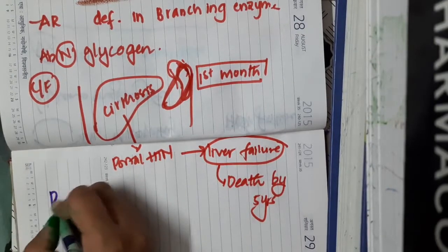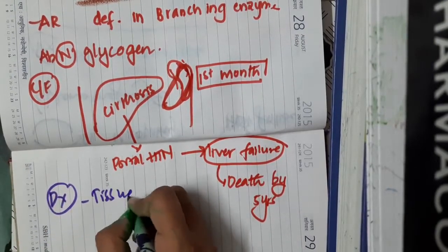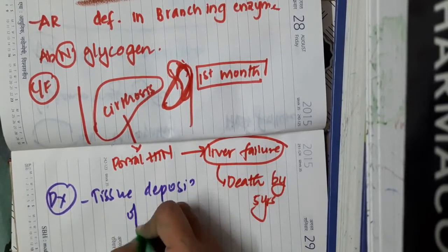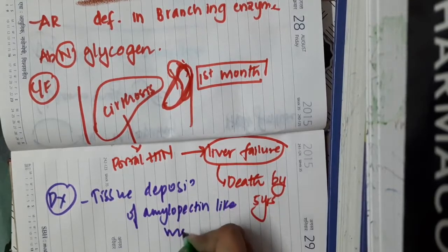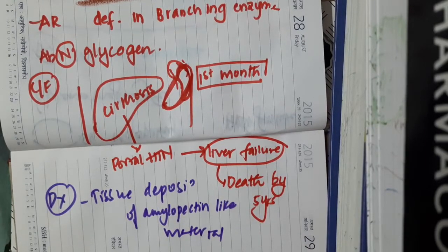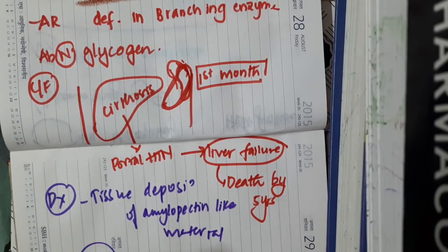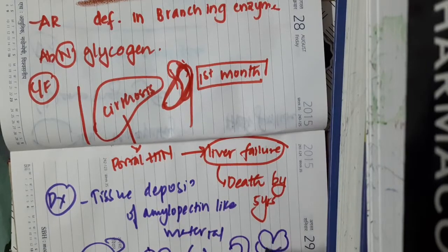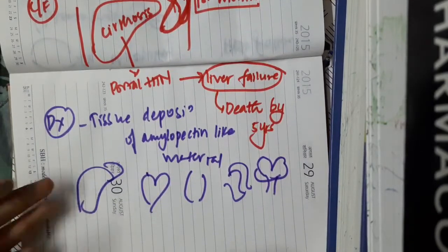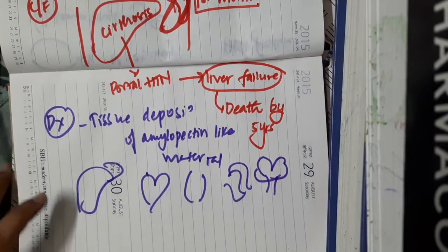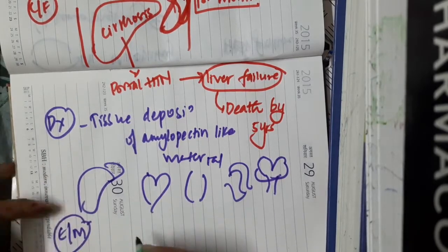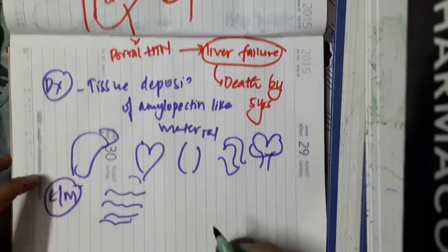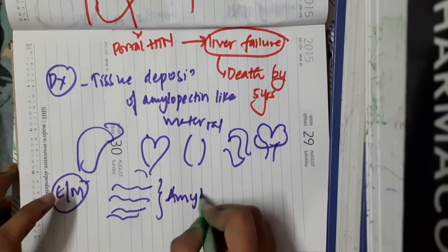To diagnose the patient, tissue deposition of amylopectin-like material should be demonstrated. This is demonstrated in the liver, heart, muscle, skin, small intestine, brain, spinal cord, and peripheral nerves. You can also do electron microscopy, where you will see accumulation of fibrillar aggregates which are typical of amylopectin.